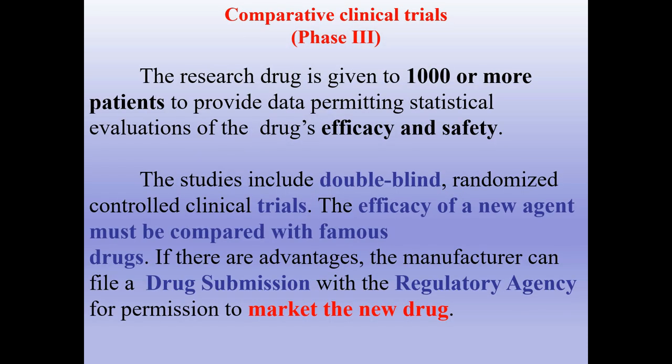Phase three: the research drug is given to 1,000 or more patients to provide data permitting statistical evaluations of the drug's efficiency and safety. The studies include double-blind, randomized, controlled clinical trials. The efficiency of a new agent must be compared with existing drugs. If there are advantages, the manufacturer can file a drug submission with the regulatory agency for permission to market the new drug — only if it is successful and the compound is safe.